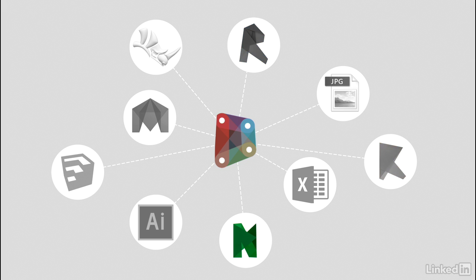You might also use Dynamo to read clash report data from a Navisworks file, which you could then use to generate 3D views of the Revit elements that need to be adjusted to resolve the clashes, or format and write the clash report data to an Excel spreadsheet.